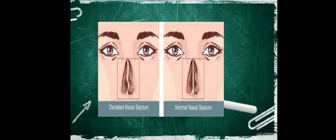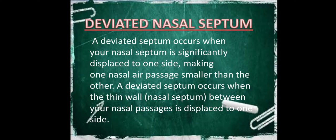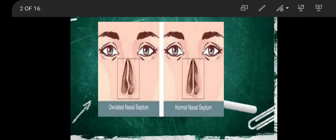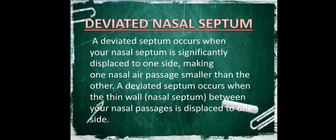So you can see the differences. In this case, the nasal septum is a disease of the nasal septum and which is an important cause of nasal obstruction. Now, we can see the definition of deviated nasal septum. A deviated septum occurs when your nasal septum is significantly displaced to one side, making one nasal air passage smaller than the other. Deviated nasal septum occurs when the thin wall, which means nasal septum, between your nasal passages is displaced to one side.